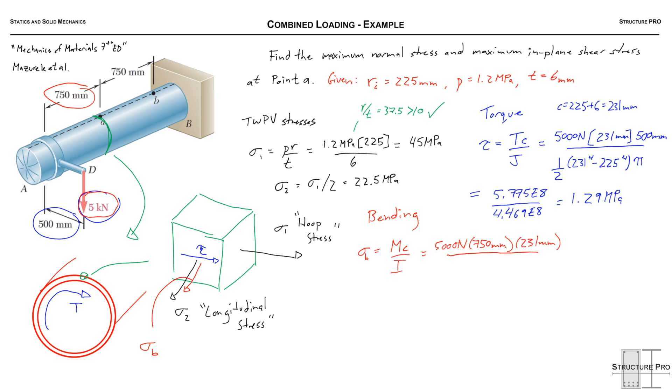I is slightly adjusted from J as well—it's one quarter of the radius to the four times pi, rather than one half. So solving for this in a similar way we get 8.663 divided by 2.235, and that gives a value of 3.88 MPa.